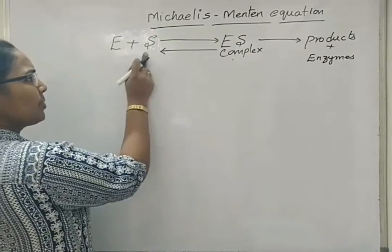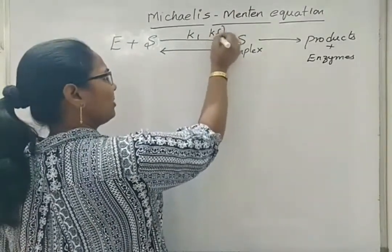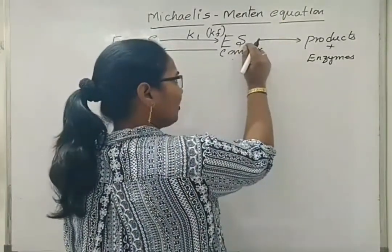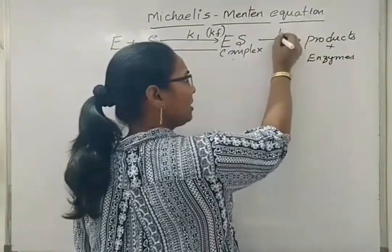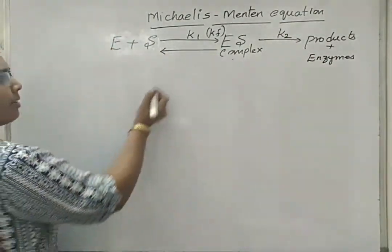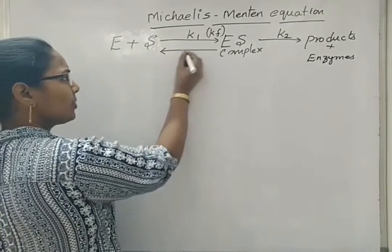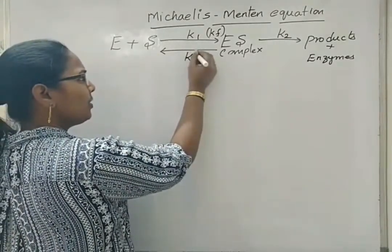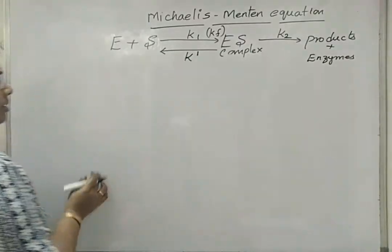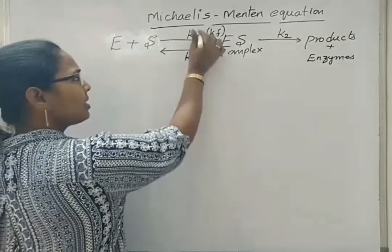When enzyme plus substrate is forwarding the reaction, we write the rate constant as K1 or Kf — meaning the rate of the forward reaction. After formation of the enzyme-substrate complex, until product formation, it is represented with K2, where K means the reaction rate constant. The dissociation of enzyme-substrate complex back into enzyme plus substrate is represented with K1 in the denominator — so numerator K1 means the forward reaction, denominator K1 means the reversible reaction.